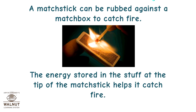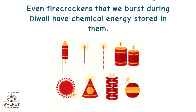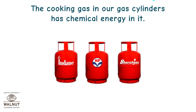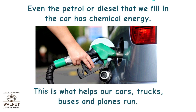A matchstick can be rubbed against a matchbox to catch fire. The energy stored in the stuff at the tip of the matchstick helps it catch fire — this is chemical energy. Even firecrackers that we burst during Diwali have chemical energy stored in them. The cooking gas in our gas cylinders has chemical energy, and so does the petrol or diesel we fill in cars. This is what helps our cars, trucks, buses, and planes run.